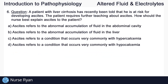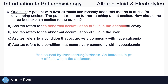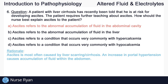Question six. A patient with liver cirrhosis has recently been told that he is at risk for developing ascites. The patient requires further teaching about ascites. How should the nurse best explain ascites to the patient? This one is A. Ascites refers to the abnormal accumulation of fluid in the abdominal cavity. Ascites is most often caused by liver scarring or cirrhosis. An increase in portal hypertension causes accumulation of fluid within the abdomen.